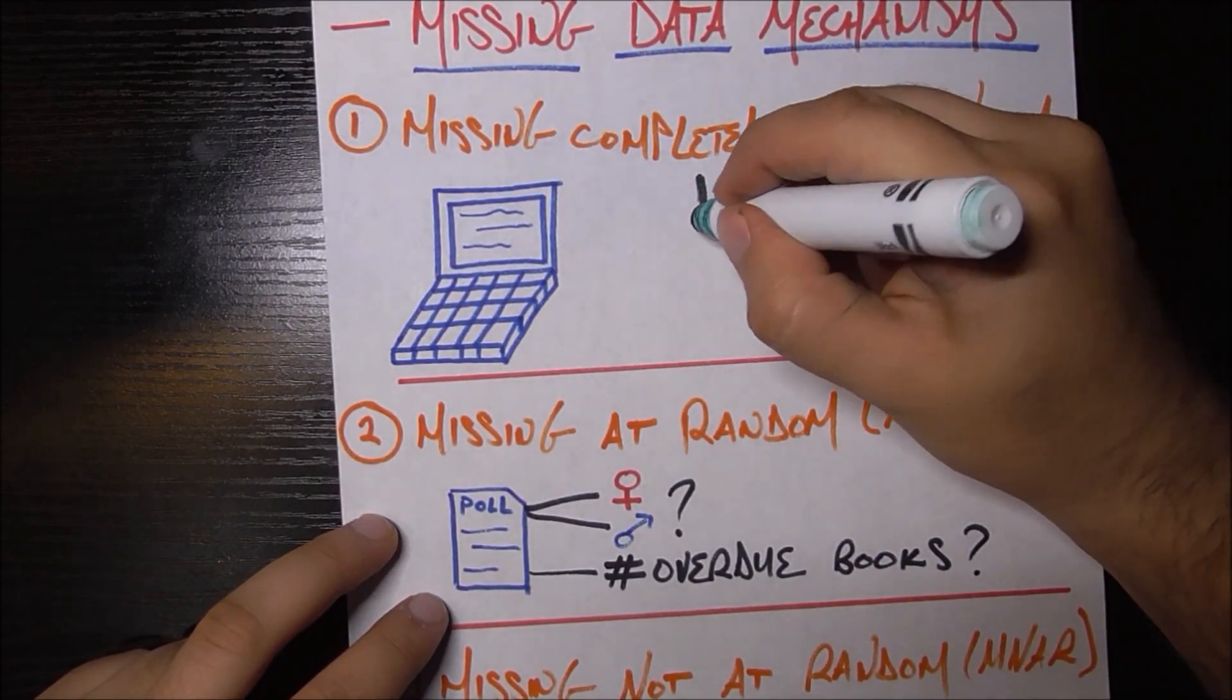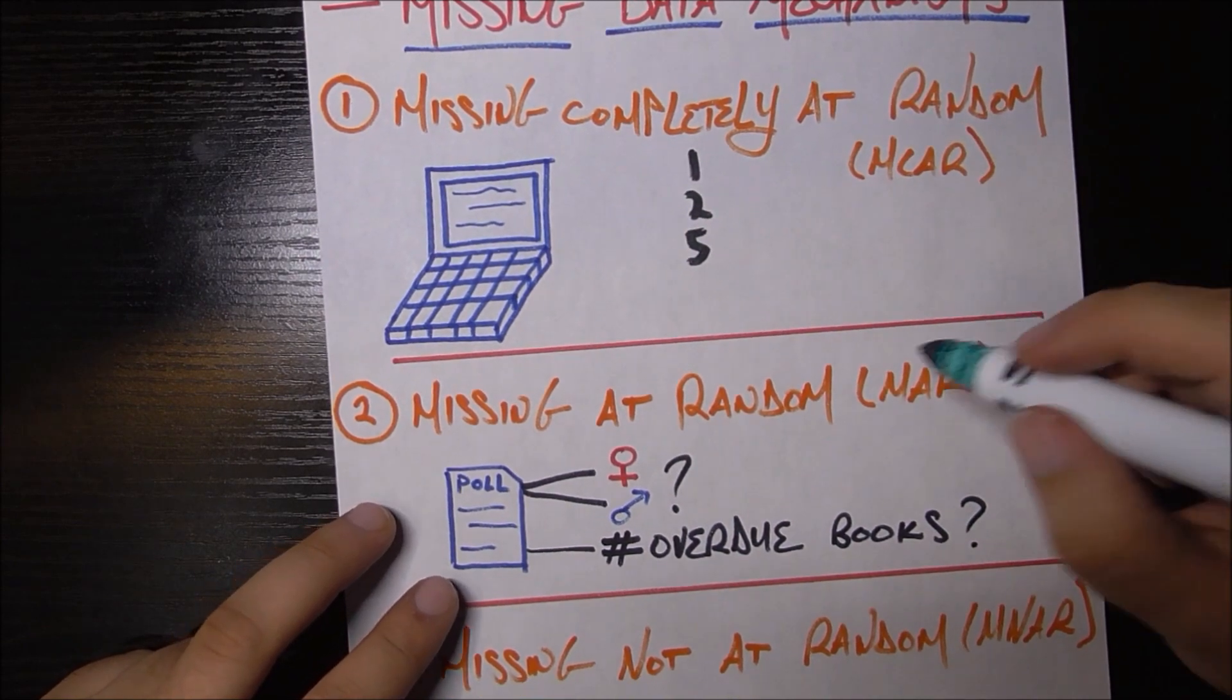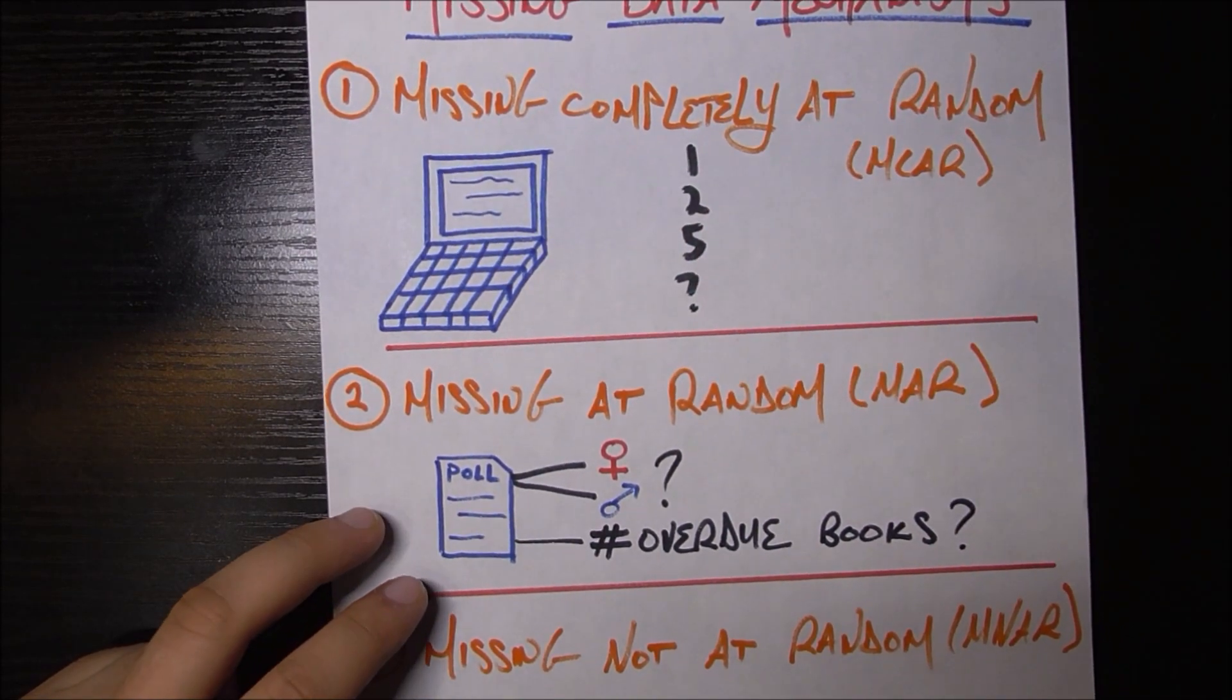So you go through the computers and you start finding values of how many overdue books people have. Maybe someone has one overdue book, someone else has two, someone else has five, but then you get to a very suspicious value. It's missing. There's nothing here.